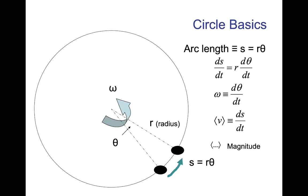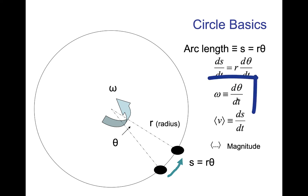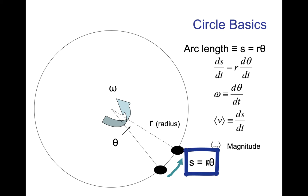We'll go back to circle basics in a polar coordinate system. In this two-dimensional coordinate system — which would correspond to x and y in Cartesian — the origin is rotating with angular velocity omega. In a particular amount of time it rotates through an angle theta, so omega is equal to d-theta/dt. The arc length s that the object moves through is equal to r times the angle theta — that's basic geometry.